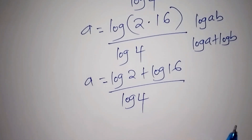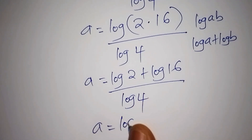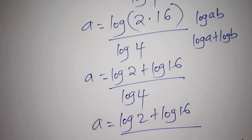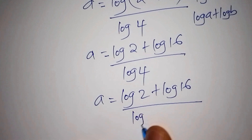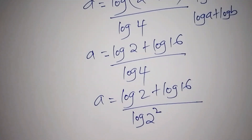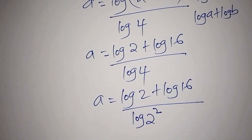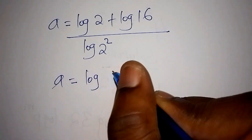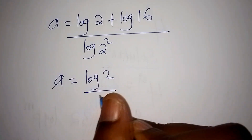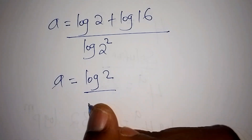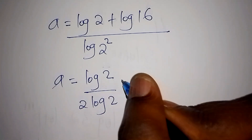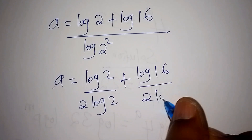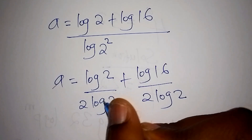Remember that the log of 4 can also be written as a is equals to the log of 2 plus the log of 16, all over the log of 4. We can also write the log of 4 as the log of 2 to the power of 2. Next, we shall divide both sides by the log of 2 to the power of 2. Log 2 to the power of 2 can also be written as 2 times the log of 2, and plus the log of 16 all over 2 times the log of 2.